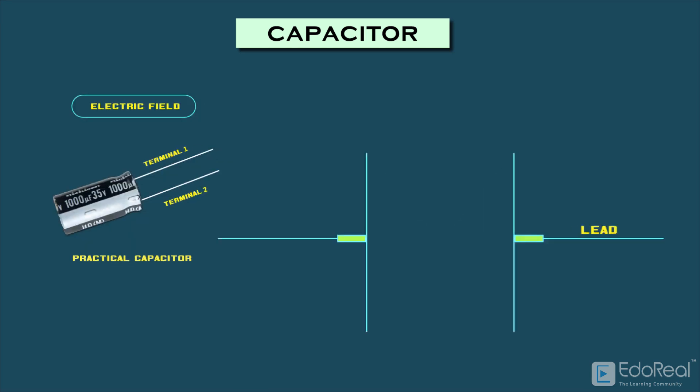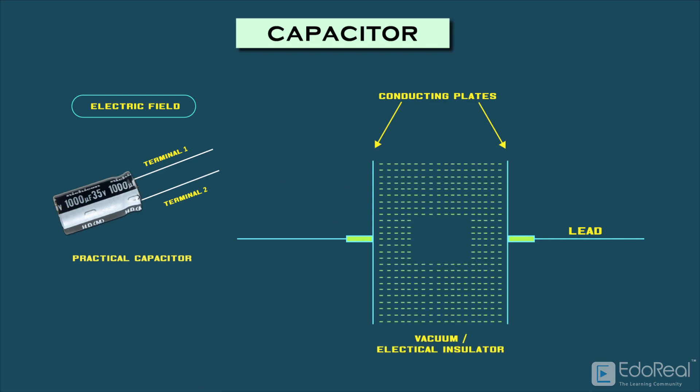A capacitor is made up of two parallel conducting plates separated by vacuum or electrical insulator, which is known as a dielectric. It is denoted with this symbol.